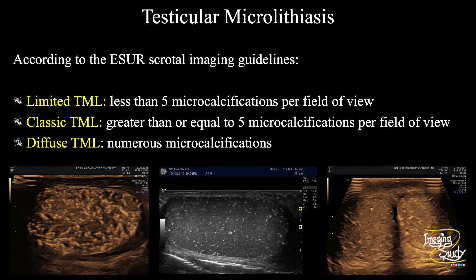We have three different types of testicular microlithiasis depending on the number per field of view. If you see less than 5 per field of view, it is called limited testicular microlithiasis. If it is around 5 to 10, it is called the classic type. And if it is more than 10, we call it diffuse testicular microlithiasis.